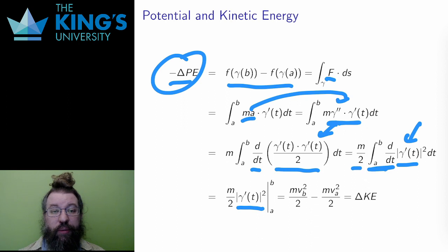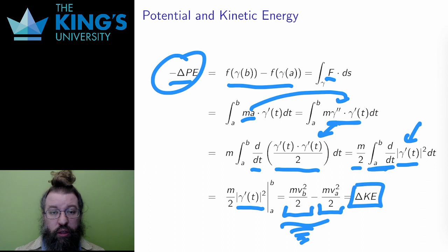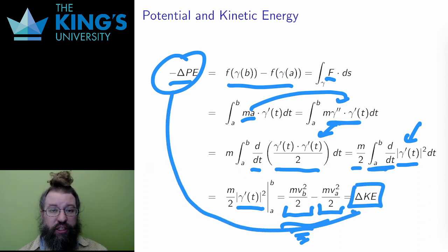The length of the tangent of the curve is scalar velocity. What I get out of this evaluation is m times the final velocity squared over two minus m times the initial velocity squared over two. These are kinetic energy terms, and this is the change in kinetic energy. The result of the calculation is that the loss in potential energy is exactly the gain in kinetic energy.